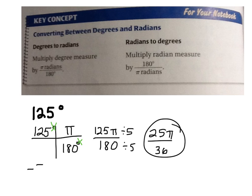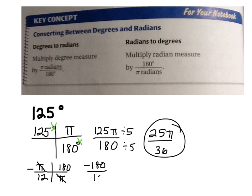Now convert negative pi over 12 to degrees. That's radians because there's a pi in it. I multiply by 180 over pi so the pi's cancel. Negative times 180 is negative 180, over 12. Negative 180 divided by 12 gives me negative 15. So my answer is negative 15 degrees.